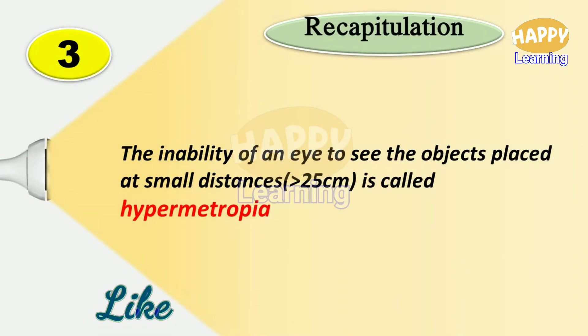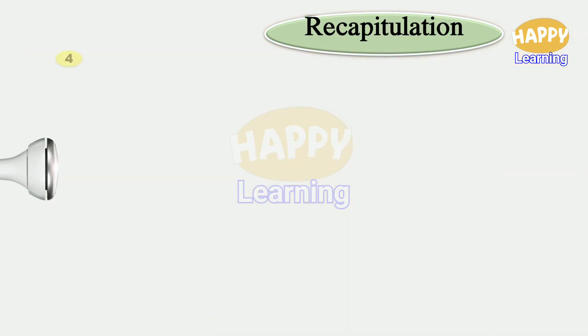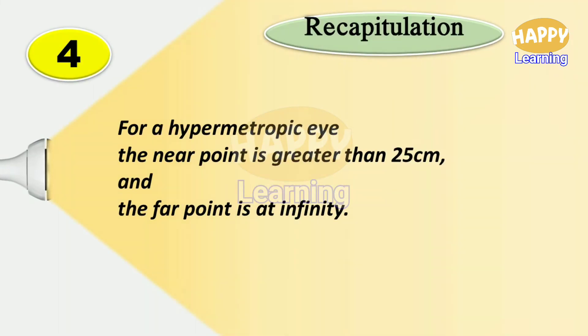Point three: the inability of an eye is called hypermetropia. Point four: for a hypermetropic eye, the near point is greater than 25 centimeter and the far point is at infinity.